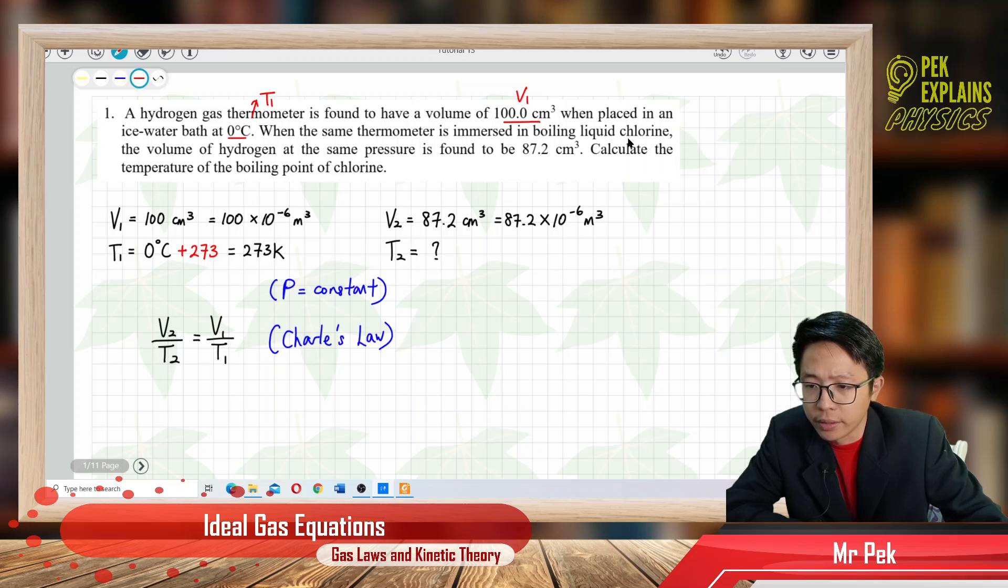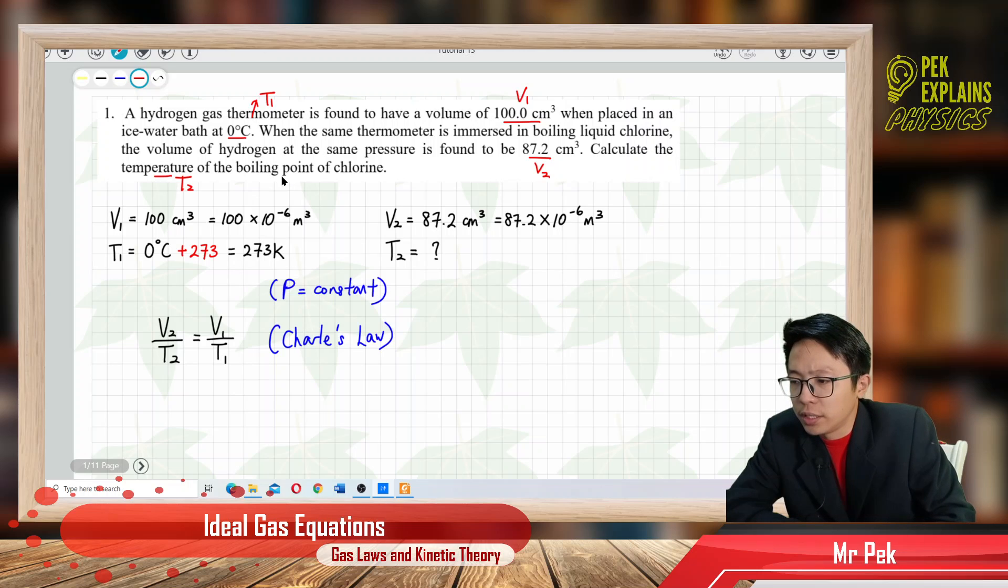We take this as volume 2, V₂, and the temperature of the boiling chlorine as temperature 2, T₂. We want to find the temperature for this volume 2. The condition here states same pressure, meaning constant pressure.